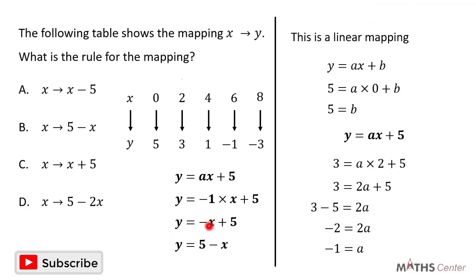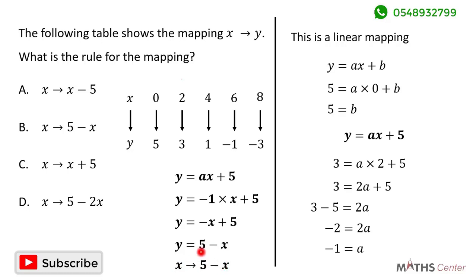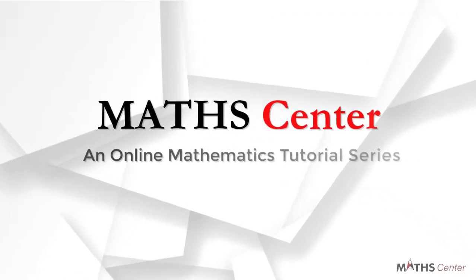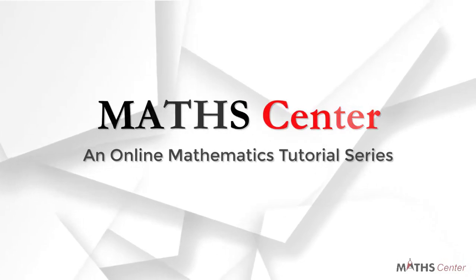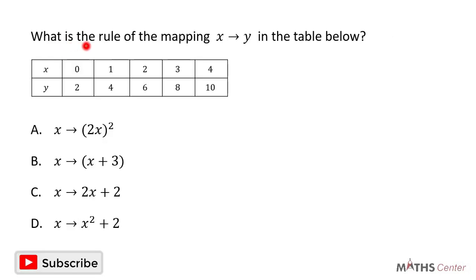Rearranging, we get y is equal to 5 minus x. The question tells us that x maps to y, and we have found that y is equal to 5 minus x, so we can say that x maps to 5 minus x. This is the rule of the mapping. When we look through the options, the correct one is B.